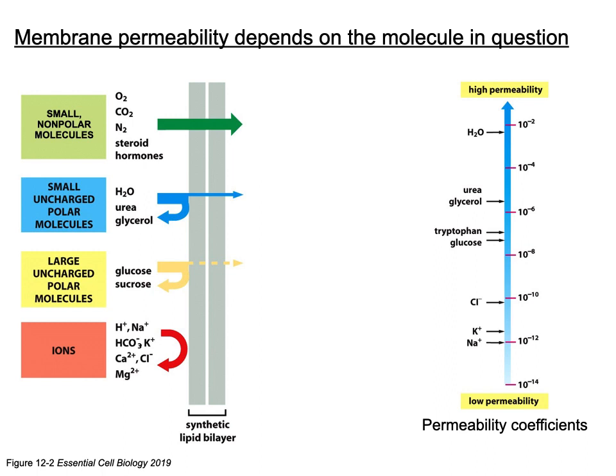At the other extreme, ions are not permeable because we want to control the gradient created so those ions move through transport proteins, using their movement across the gradient to create energy and catalyze reactions. Large and small uncharged polar molecules vary — smaller ones like water, urea, and glycerol are more likely to cross, but often require a channel or pore. The aquaporin channel allows water entry — water does not readily diffuse across like smaller non-polar molecules.